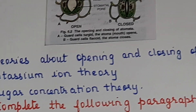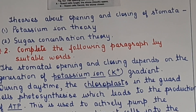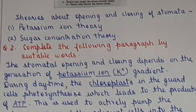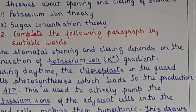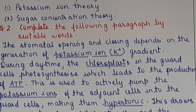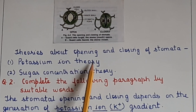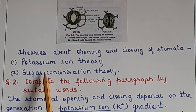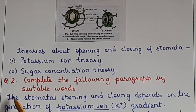The sugar concentration theory also involves chloroplasts in the guard cells carrying out photosynthesis, increasing glucose concentration in the guard cells. They become hypertonic, water from neighbouring epidermal cells enters by osmosis, making the guard cells turgid and opening the stoma. Only the potassium ion theory is required as per the current syllabus scope for photosynthesis.